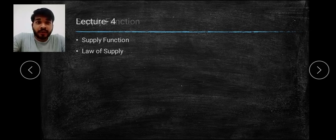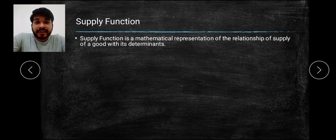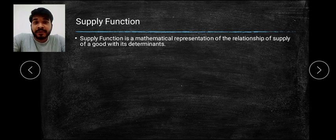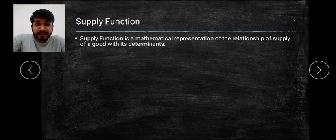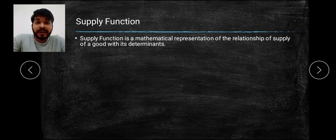Supply Function is nothing but a mathematical expression or representation of the relation of supply of a good with its determinants. Determinants we have already studied in our first lecture — that is, price of a product, level of technology, factor of production or cost of production, and expectation regarding future prices and other factors. All these different determinants and their relationship with the supply function are written in a mathematical equation form.